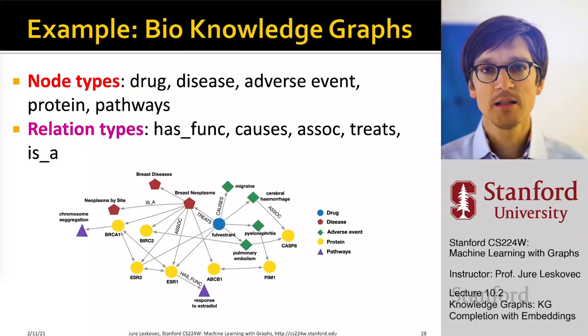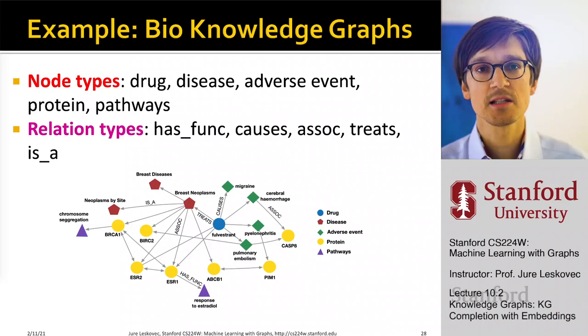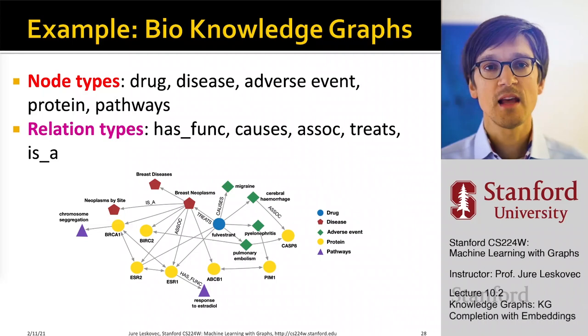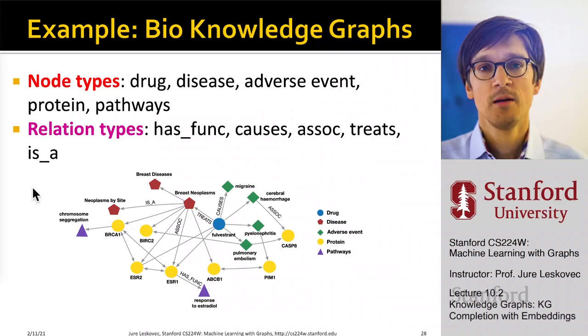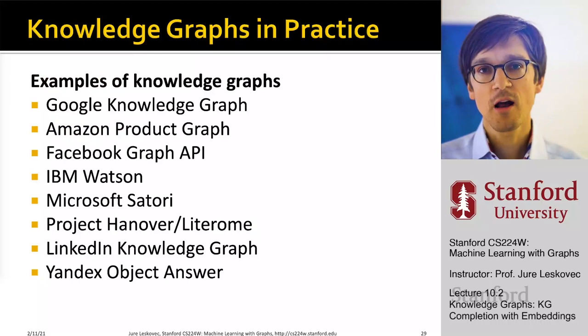Another example is in biomedicine, where knowledge graphs can have node types like drugs, diseases, adverse events, proteins, and disease pathways. We can also have different relation types like has function, causes, is associated, treats, and is a type of. This encodes knowledge about biology and how life works in graphical form.